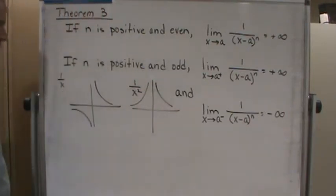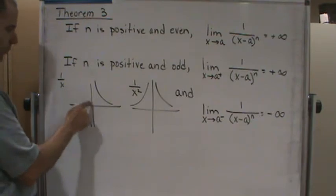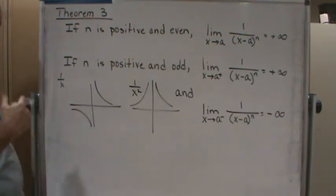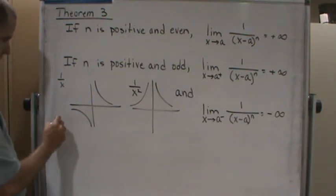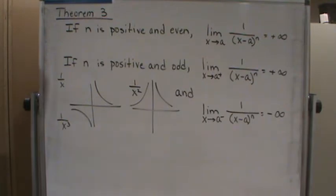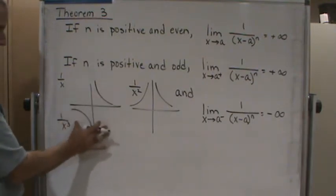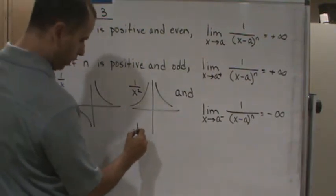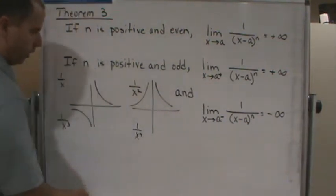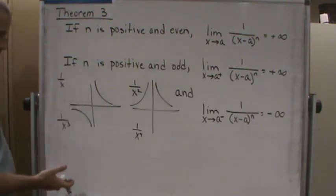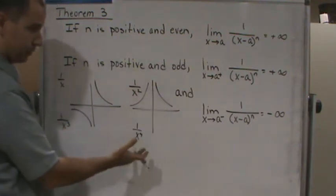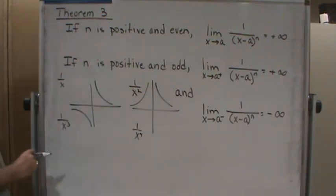But it's also interesting to point out that this behavior happens for higher powers of the reciprocal function. For example, one over x cubed will look similar to this, whereas one over x to the fourth will look similar to this one. And so what we find is that we have odd powers versus even powers. And so that's where this theorem comes from.